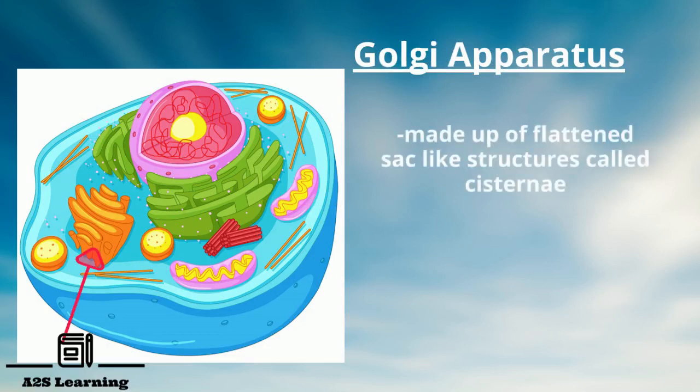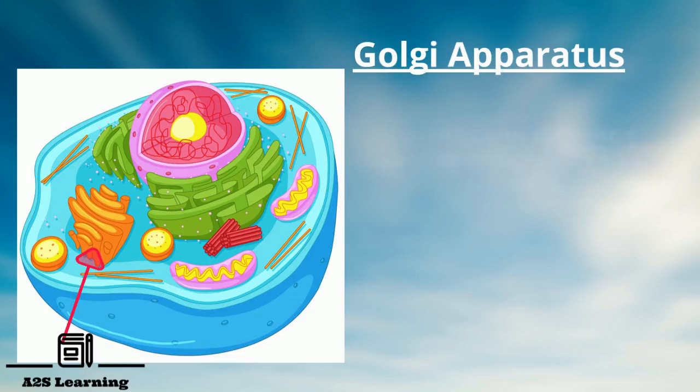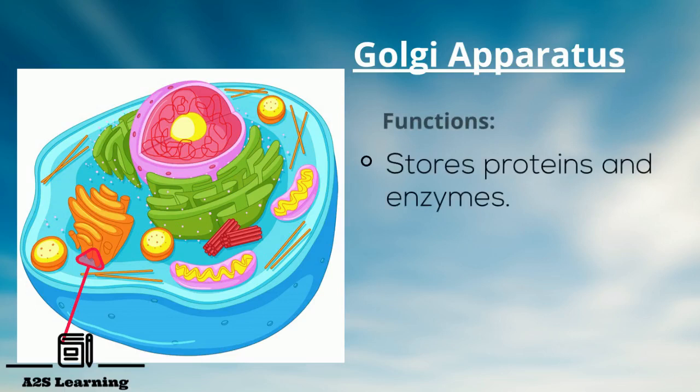Golgi apparatus: It is made up of flattened sac-like structures called cisternae. It is usually found near nucleus. Proteins which are formed in endoplasmic reticulum are processed in Golgi apparatus. Golgi apparatus stores proteins and enzymes.